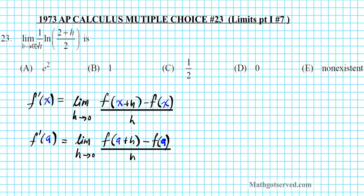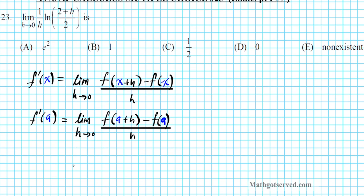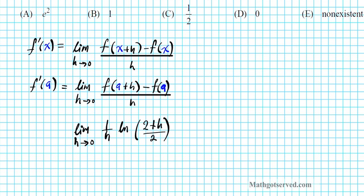So let's rewrite this limit in this form. In the problem, we have the limit as h approaches 0 of 1 over h times the natural logarithm of 2 plus h over 2. This looks nothing like what we have, so we have to carry out some manipulation to make it look like this. We're going to employ the quotient property of logarithms: the natural logarithm of x over y can be written as the natural logarithm of x minus the natural logarithm of y.